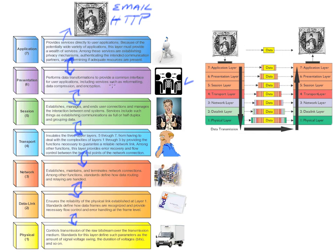After the presentation layer processes the data going down, it hands it to the session layer — the schmoozer, the negotiator, the dealmaker. Your computer can have around 15 different sessions open at the same time. For example, you could open a web browser to Cisco.com, Juniper.com, Sun.com, and Microsoft.com simultaneously. Keeping all those straight is the logical function of the session layer — negotiating the establishment and termination of sessions between devices.